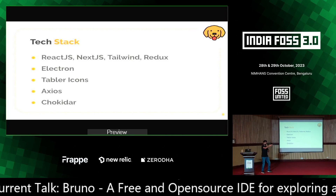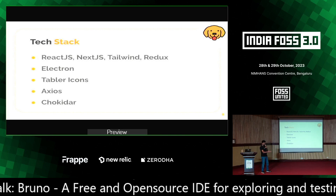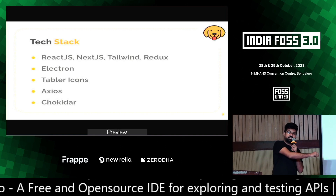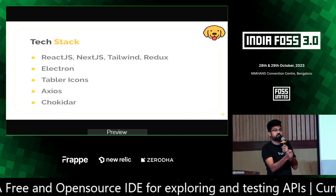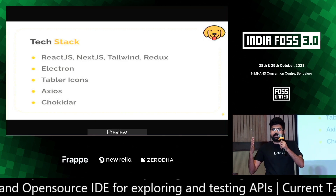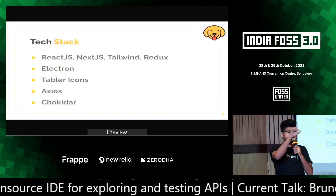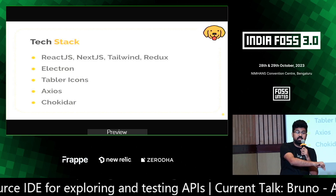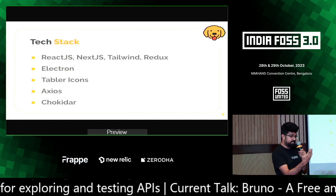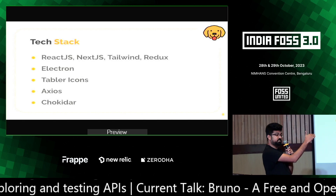We use a library called Chokidar, which does the file system sync. Bruno saves things to your file system — and it's not just one direction. Any time you make a change in a file, it reflects back in Bruno. You can think of Bruno like VS Code: it's a visual editor where your collections are stored inside your file system.